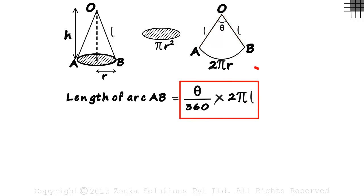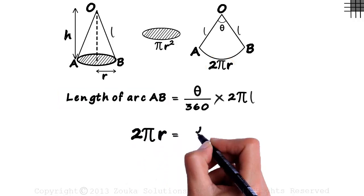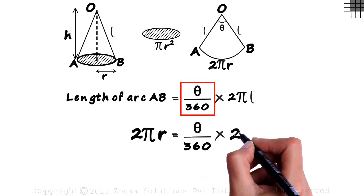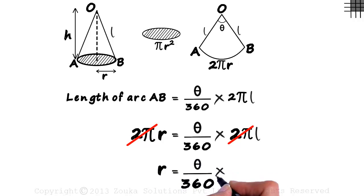This tells us that the length of arc AB is a part of the circumference of the big circle that can be formed here. But the length of arc AB is also 2 pi R. That will equal theta by 360 multiplied by 2 pi L. Cancelling 2 pi out from both sides, we get R equal to theta by 360 multiplied by L.